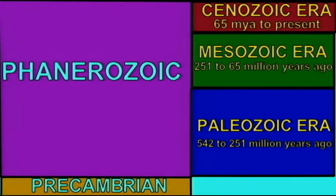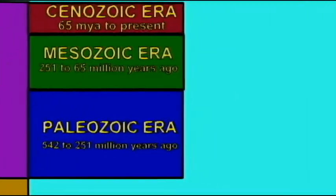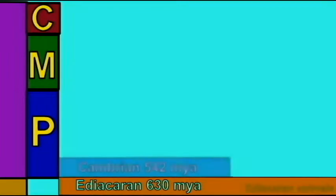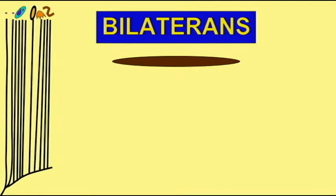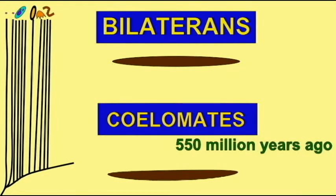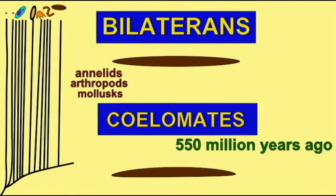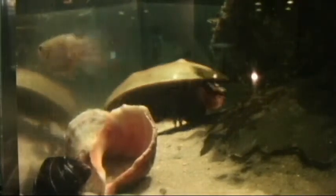Coelomate animals are more complex than simple bilaterians. They have a more complex brain, a body cavity known as a coelom, and possess many other features. The early coelomates seem to be present by the very end of the Ediacaran period, and have certainly begun to diversify during the early Cambrian period. Some of these early coelomates seem to be the ancestors of arthropods, mollusks, and other complex invertebrates.